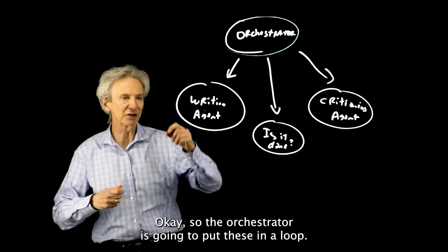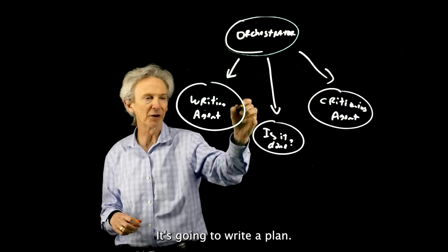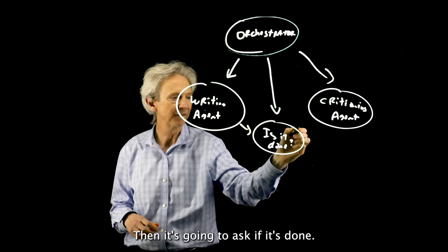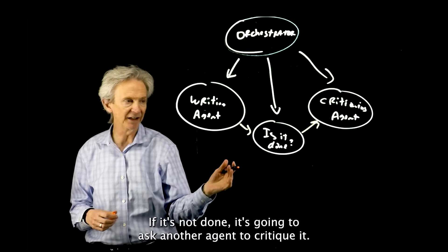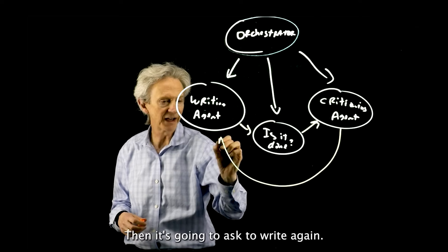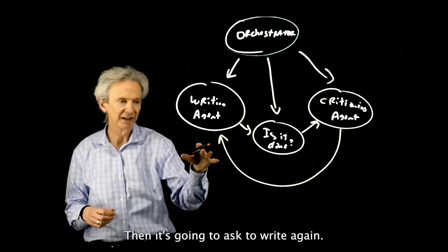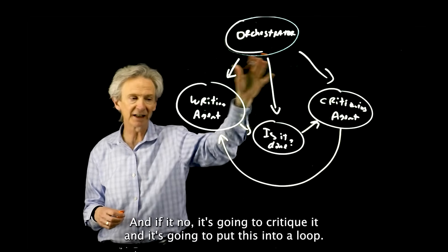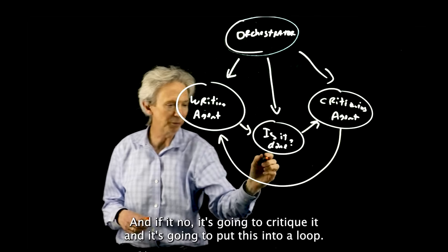The orchestrator is going to put these in a loop. It's going to write a plan. Then it's going to ask if it's done. If it's not done, it's going to ask another agent to critique it. Then it's going to ask to write again, then it's going to ask is it done again? If it's no, it's going to critique it, and it's going to put this into a loop.